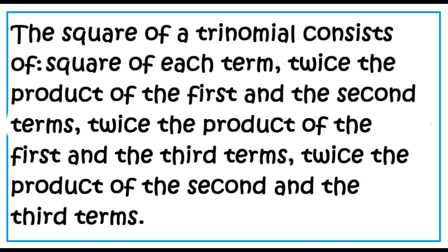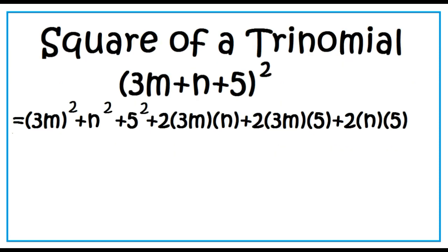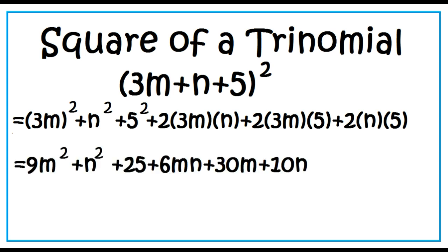The square of a trinomial consists of the square of each term, twice the product of the first and the second terms, twice the product of the first and the third terms, and twice the product of the second and the third terms. The square of the quantity 3m plus n plus 5 simplifies to 9m squared plus n squared plus 25 plus 6mn plus 30m plus 10n.